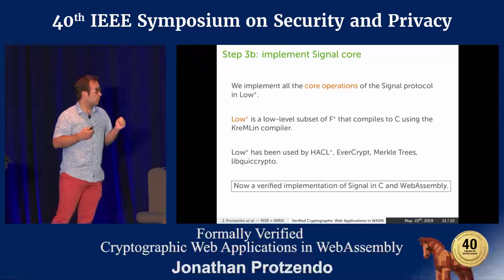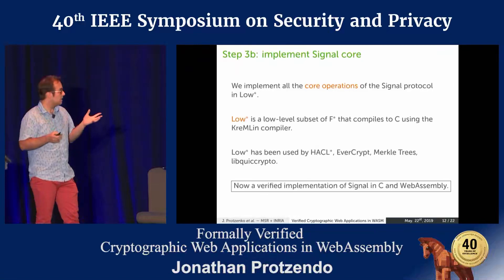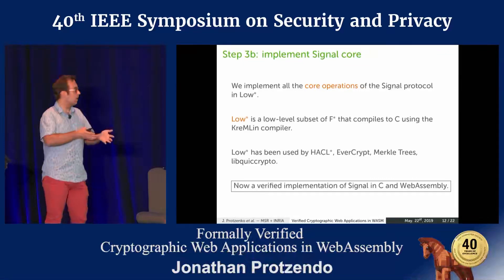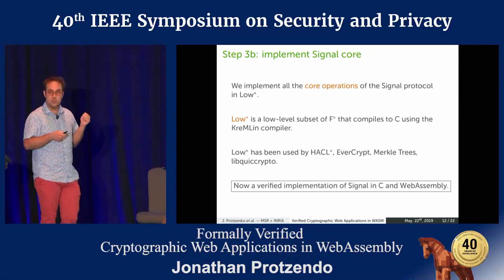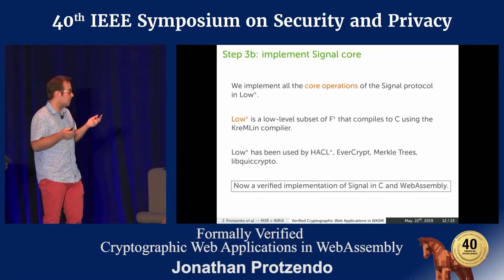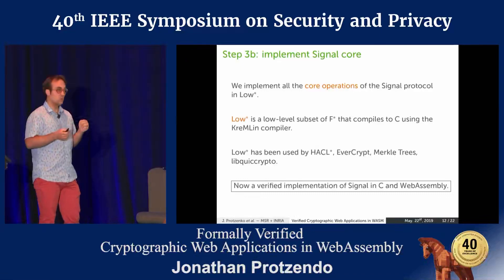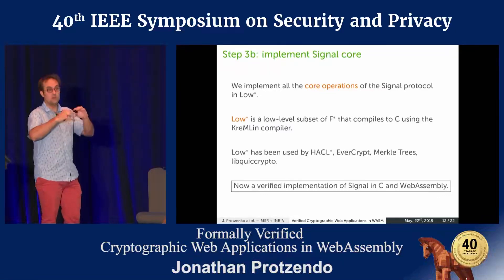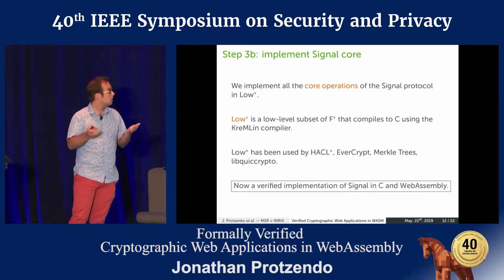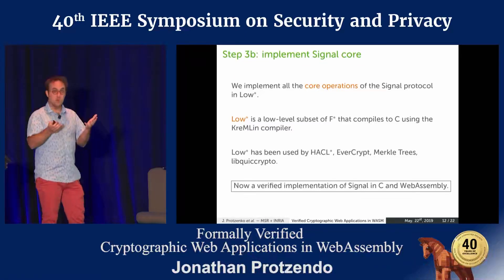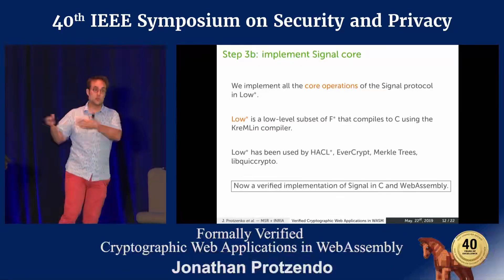The language we're using for that purpose is called LoStar. It's a subset of F-star that would normally compile to C. But in this work, we repurpose the target of this language from C to WebAssembly. LoStar is the language that has been used to write HacklStar, the library of crypto primitives, but also a larger provider called EverCrypt, an implementation of Merkle Trees, a cryptographic library for the QUIC protocol, and many other software projects. We now have an implementation of the Signal protocol written in LoStar. By default it compiles to C, but we retarget it to WebAssembly instead.